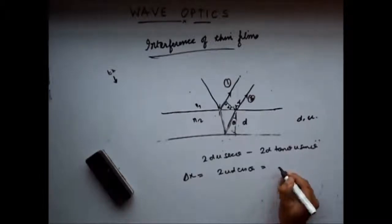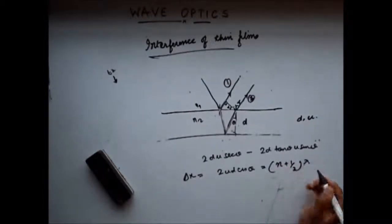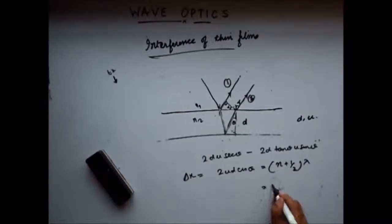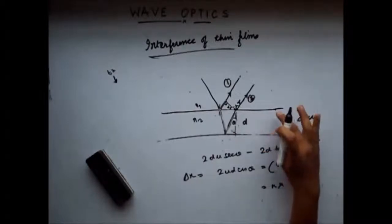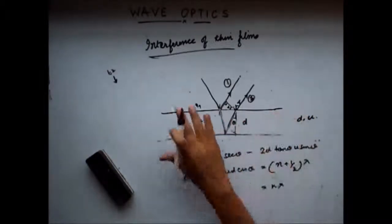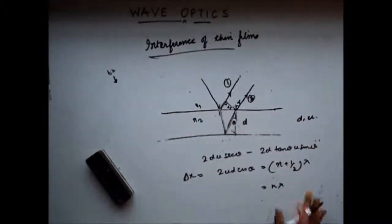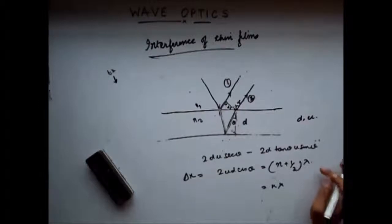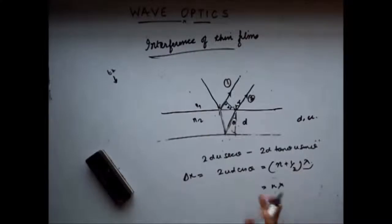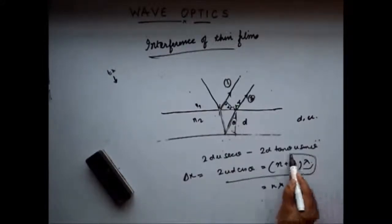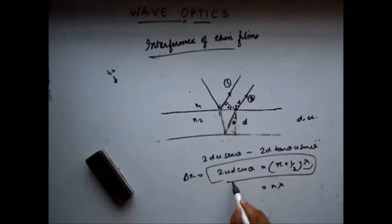This delta x should be equal to (n + ½)λ for constructive interference, and equal to nλ for destructive interference. So when we have a thin film of some substance present in a medium, we get an interference pattern, and the conditions for constructive and destructive interference are these.